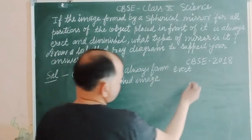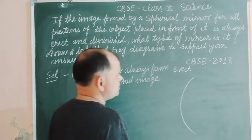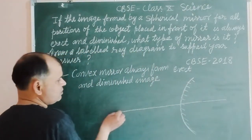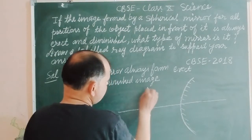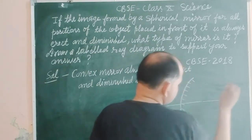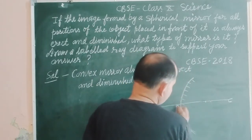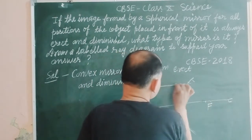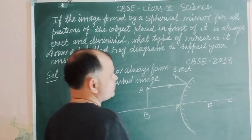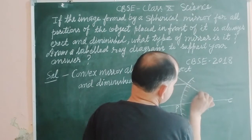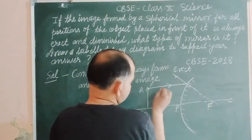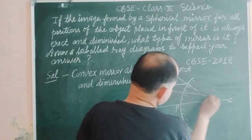So first we draw the diagram. This is a convex mirror. This is the principal axis of the mirror. We take an object here, AB. This is the center of curvature, and this is the pole P and focus F. Now, one ray goes from the object parallel to the principal axis, and another ray passes through the center of curvature.